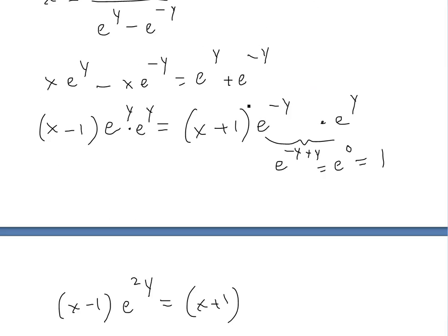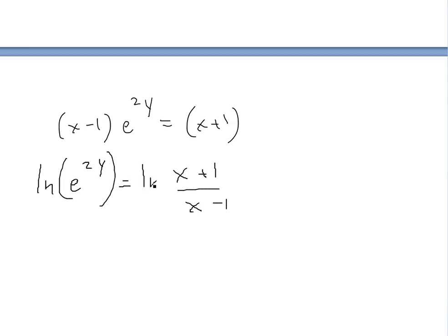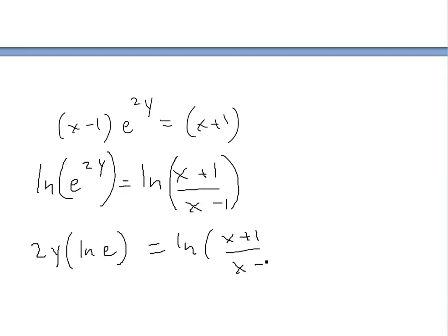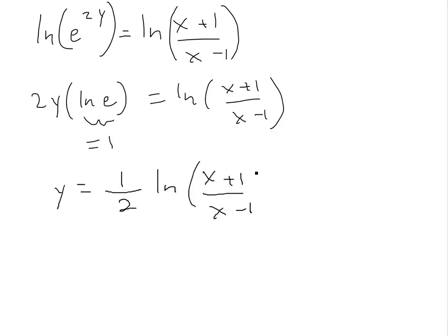Dividing both sides by (x - 1), we get e^(2y) = (x + 1) / (x - 1). Now take the natural log of both sides and use log properties to bring down the 2y: 2y · ln(e) = ln((x+1)/(x-1)). Since ln(e) = 1, we have 2y = ln((x+1)/(x-1)), and dividing by 2 gives y = (1/2) · ln((x+1)/(x-1)). There you go.